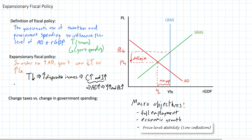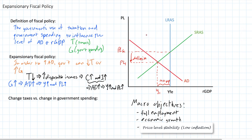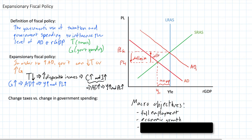Government spending can also lead to an increase in aggregate output and the price level, and this one is more straightforward because government spending is a direct component of aggregate demand. An increase in government spending directly injects money into the circular flow and causes an increase in aggregate demand, which in turn leads to an increase in national output and a higher price level — a higher inflation rate. Moving over to our graph, we can illustrate the effect of these expansionary fiscal policies: lower taxes or increased government spending shift the AD curve outward and to the right, helping the economy achieve the full employment level of output.